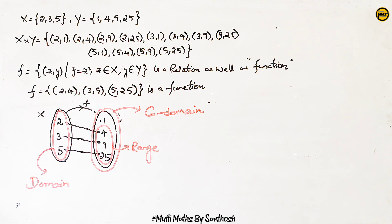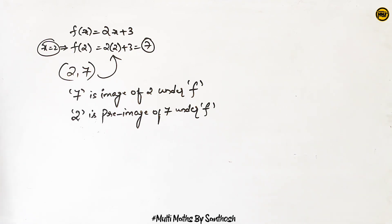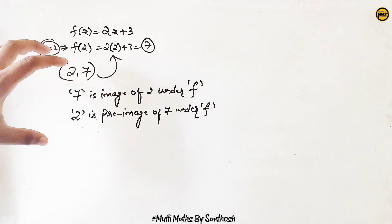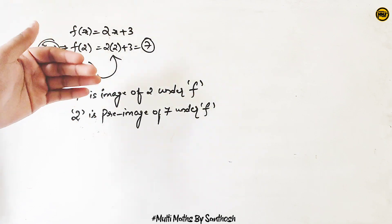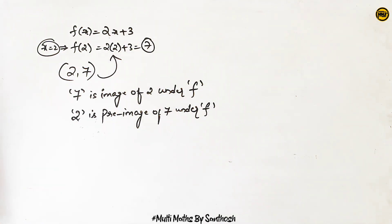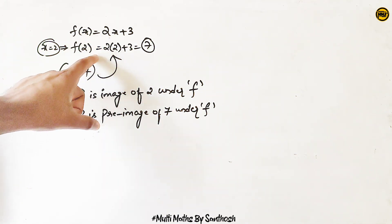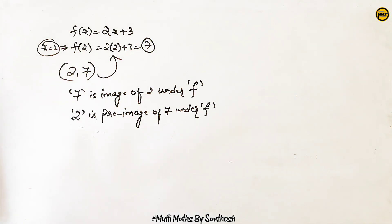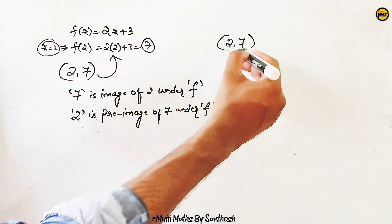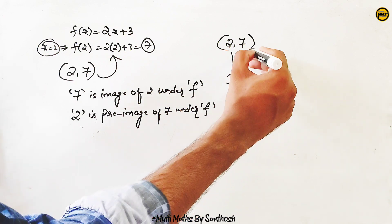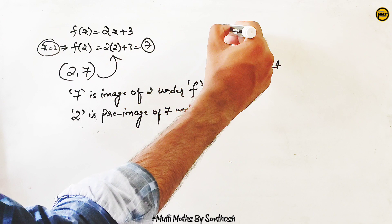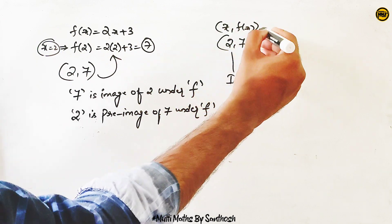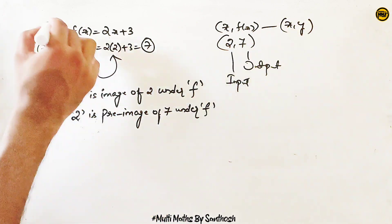I will draw the diagram and show you the image. I will show you the function f(x) = 2x + 3, and I will show you the example. So f(x) = 2x + 3 and x = 2 — input 2, the output is 7. And that means the ordered pair (2, 7). This is the input and this is the output — this is x and this is f(x), or this is x and this is y.